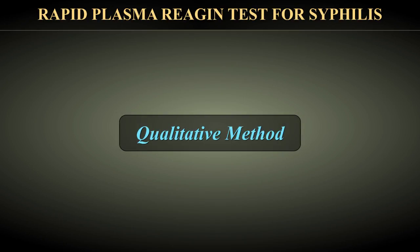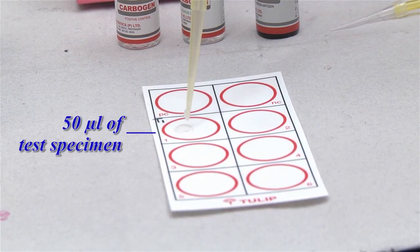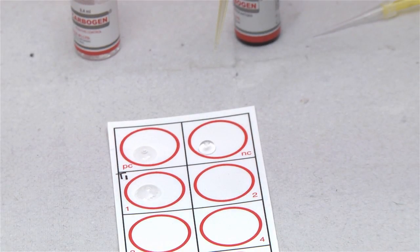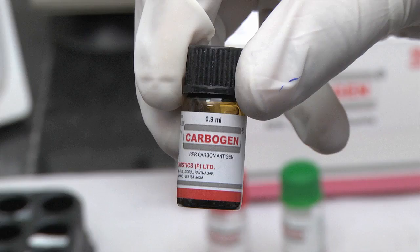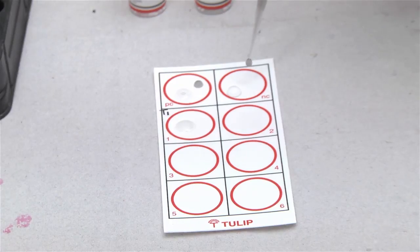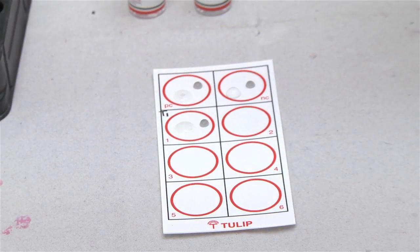Qualitative method: Pipette one drop or 50 microlitres of test specimen, positive control, and negative control onto separate reaction circles of the disposable card using a micropipette. Add one drop of well-mixed RPR antigen reagent next to each specimen using the reagent dropper provided in the kit. Do not let the dropper tip touch the liquid on the slide.